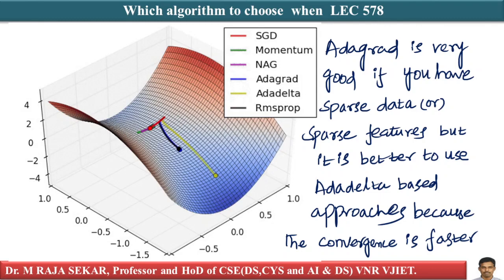AdaGrad is very good if you have sparse data or sparse features, but it is better to use AdaDelta-based approaches because the convergence is faster typically.